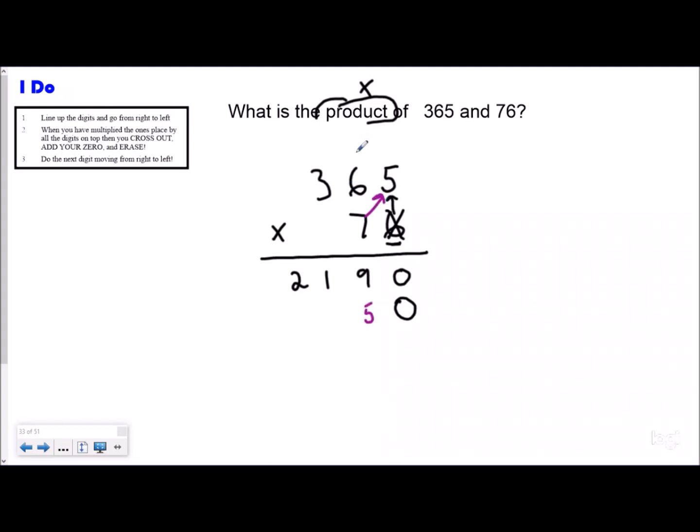Going from right to left, 7 times 5 is 35. Now this part is a little confusing for some people; sometimes they want to regroup the three over my hundreds place. You always regroup it to the place value next or to the left of the number on top, so we're going to regroup the three next to the five over the six.